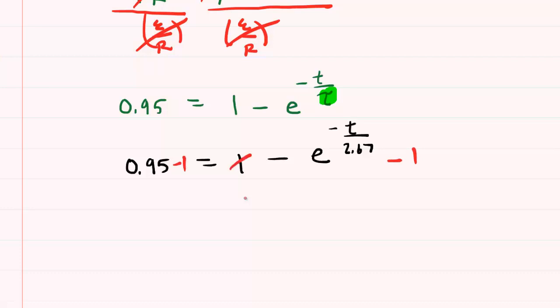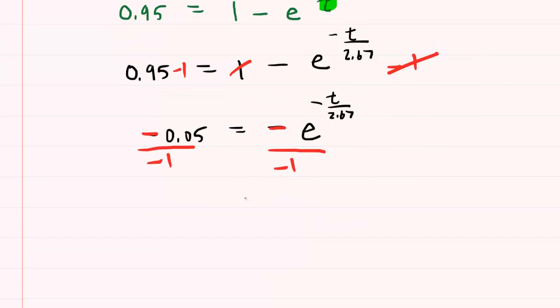By doing that, the 1 here and the minus 1 there will cancel out. The left-hand side, we have 0.95 minus 1, which of course is negative 0.05. This will equal negative e raised to the negative t over 2.67. The negative sign here and the negative sign on the other side effectively cancel out. Technically, we have to divide both sides of the equation by negative 1, but what that does is cancel out the negative sign. So 0.05 is equal to positive e, these negatives have canceled, raised to the power of negative t over 2.67.